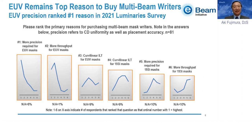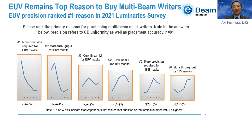Number of shots is proportional to the constituent rectangles or 45-degree triangles you fracture the incoming shapes into. Shape complexity results in longer write times. Multi-beam machines process in constant-size pixels, so there is no change in write time regardless of the complexity of incoming shapes. That's a huge key difference.